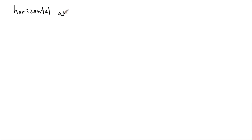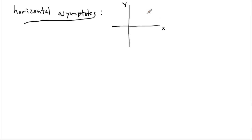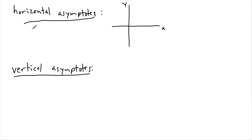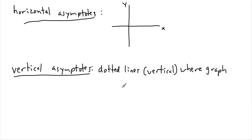Now let's talk about horizontal and vertical asymptotes. A vertical asymptote is drawn as a dotted vertical line — it's where the graph does not exist, in other words where it's undefined.